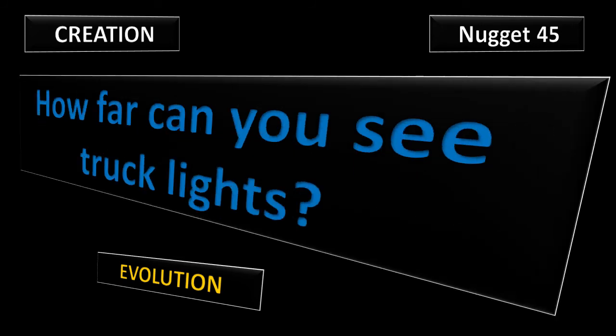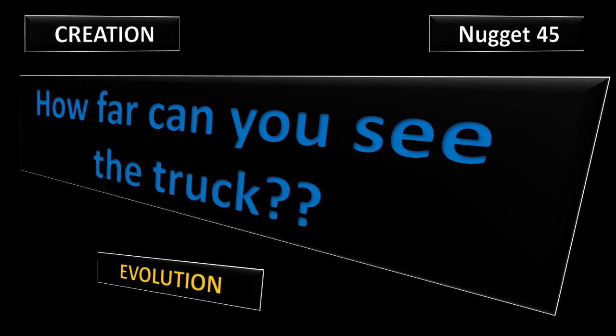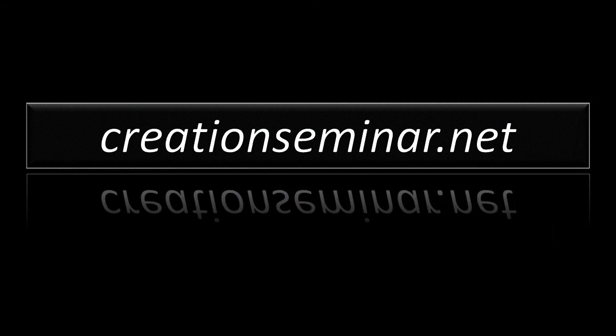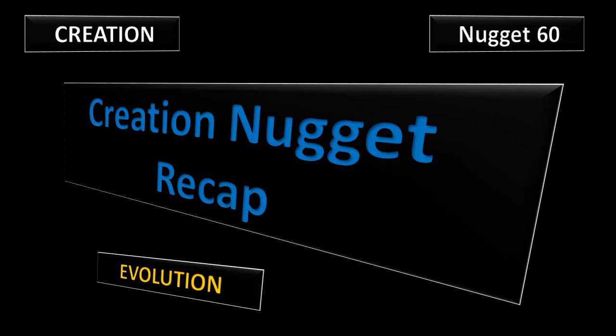Nugget 45: How far can you see those truck lights anyway? And what does this prove? Do this experiment on your own. Nugget 46: It's part two. How far can you see the truck? Do this experiment studying science for yourself. And Nugget 60 is this recap, making this the 33rd nugget on creation.